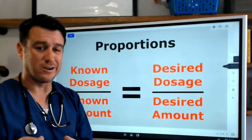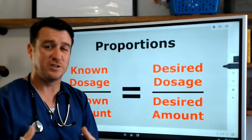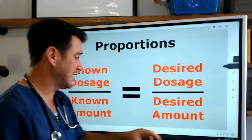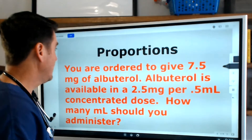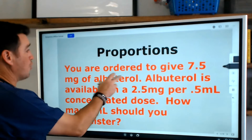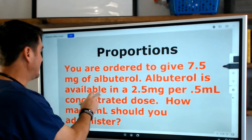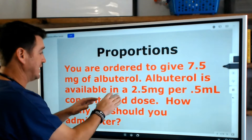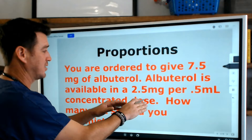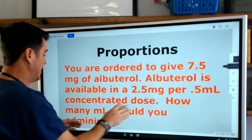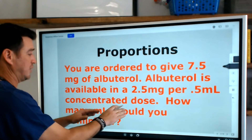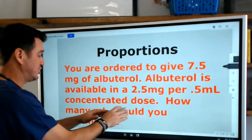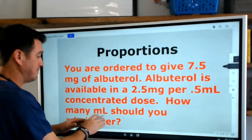So that sounds all good — we know the formula, but how do we use the numbers? Let's look at a scenario. You are ordered to give 7.5 milligrams of albuterol. Albuterol is available in a 2.5 milligram per 0.5 ml concentrated dose. How many milliliters should you administer?